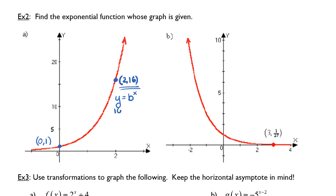Substituting 16 in for y, I get b raised to the 2, substituting 2 in for x. If I take the square root of both sides, I'll get b is equal to 4. And so rewriting the function, y equals 4 raised to the x. This represents the curve given in example 2a.